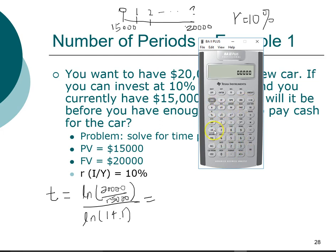So we have twenty thousand dollars divided by fifteen thousand dollars, and we want to take the natural log of that. That gives us 0.2877 as our numerator.